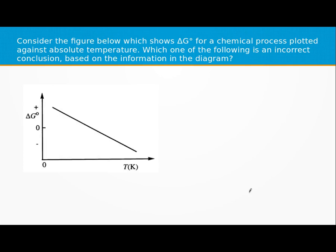Okay, we're going to consider the figure below, which shows delta G for a chemical process plotted against absolute temperature. And we want to know which of the following solutions down below is the correct one.